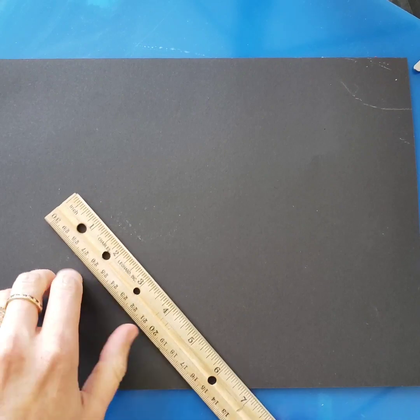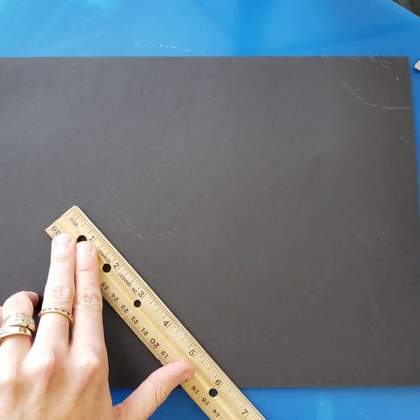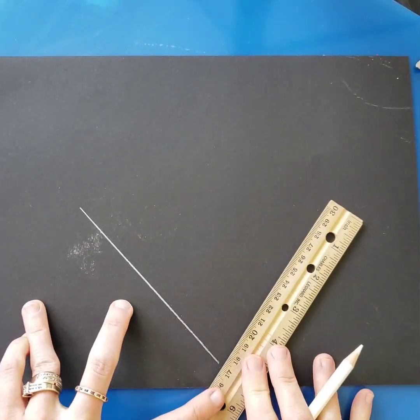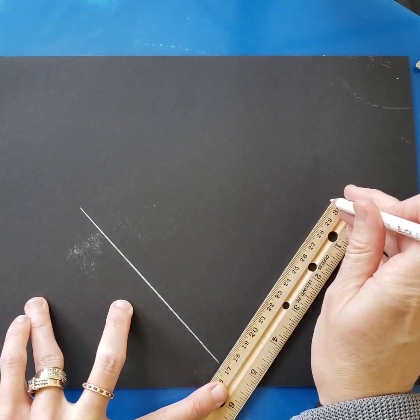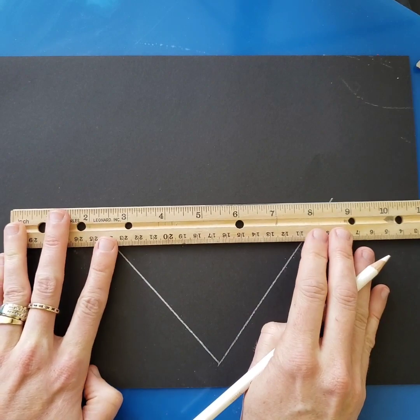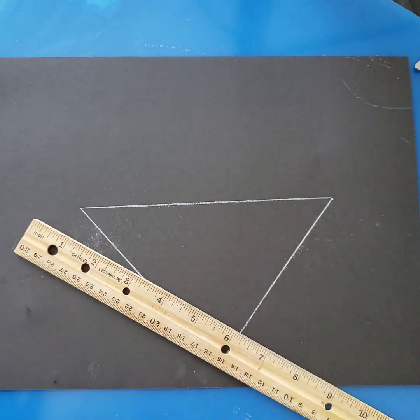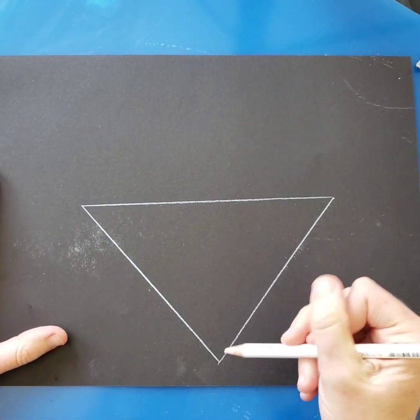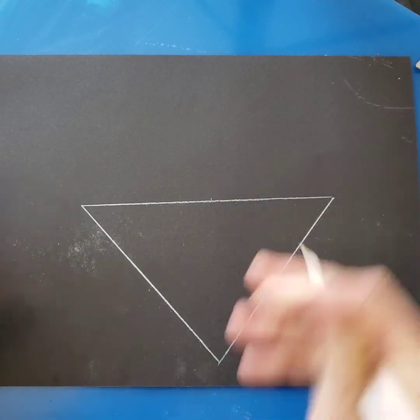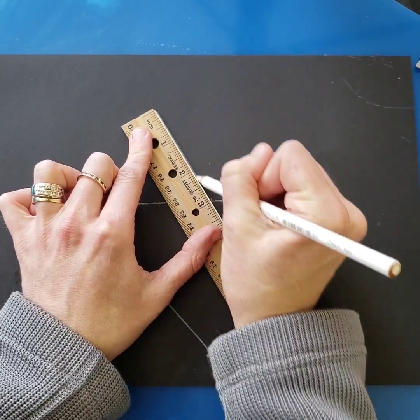So to get started, the first thing that I'm going to do is about halfway down my page, I'm going to be drawing a triangle. So this triangle is going to be the base of my gemstone heart. And then coming straight up from the bottom point of that triangle, we're going to place a V shape.